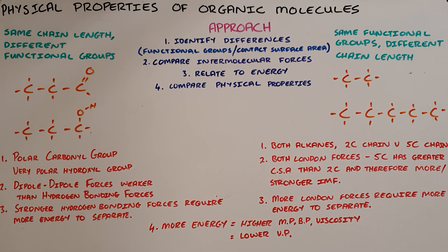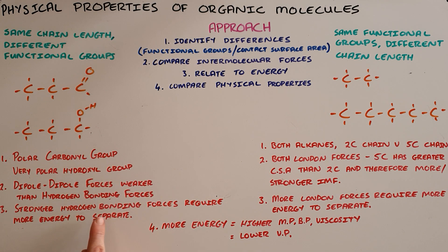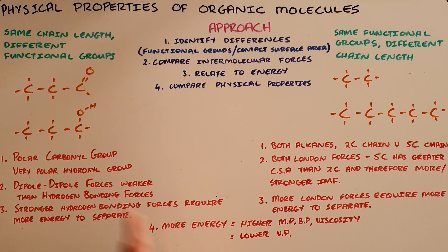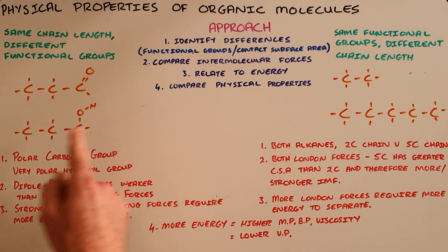The third step is to relate that intermolecular force difference to energy, and that is done by saying the stronger hydrogen bonding forces require more energy to separate. The final step would be to say therefore, since more energy is required, the alcohol would have a higher melting point, boiling point, or viscosity, and a lower vapor pressure than the aldehyde.